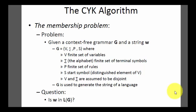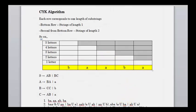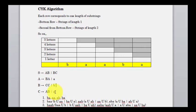This tutorial discusses the CYK algorithm, which is used to determine if a string belongs to a particular context-free grammar language. Given a context-free grammar G and a string W, where V is a finite set of variables, Sigma is the alphabet, P is the finite set of productions, and S is the start symbol — V and Sigma are assumed to be disjoint. The first rule of the CYK algorithm is that all productions must be in Chomsky Normal Form; if not, CYK cannot be applied.